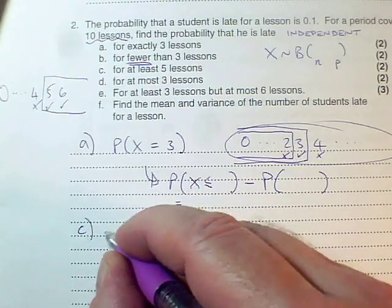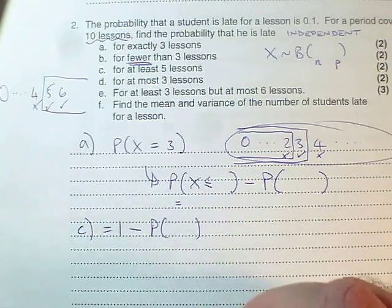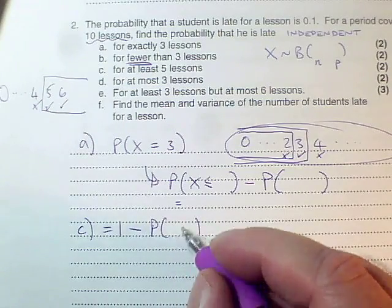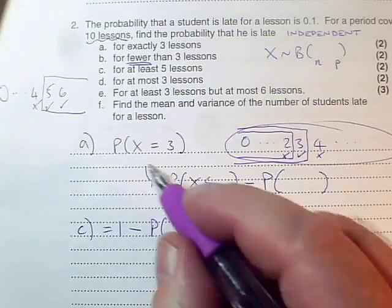So on part C, you're going to be doing one minus the probability, and make sure you tell me what probability that's going to be. Look up the probability on the calculator, do the subtraction.